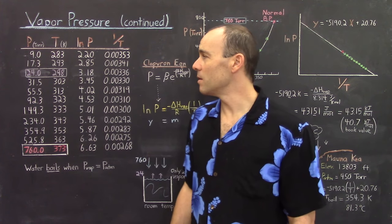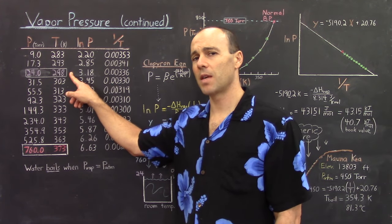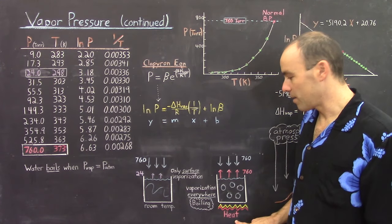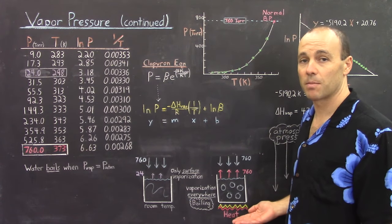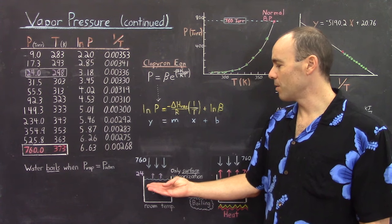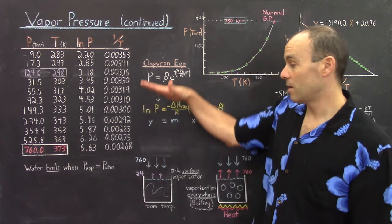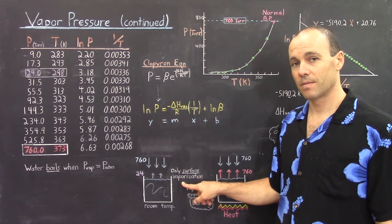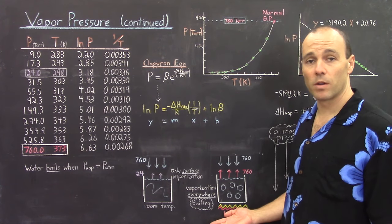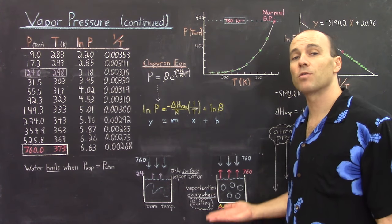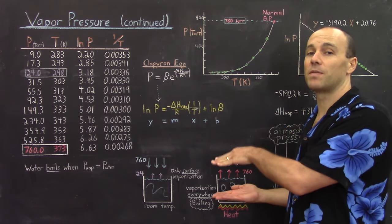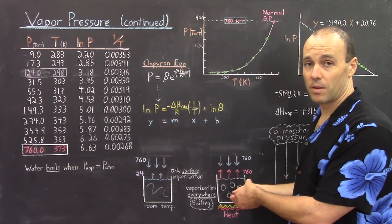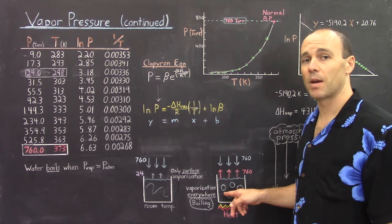Let's take a closer look at the difference between vaporization at room temperature versus at the boiling temperature. Here are two containers of water: one is at room temperature, and the other at the boiling temperature. Room temperature water only exhibits a vapor pressure of 24 Torr, which is much less than the 760 Torr of the atmosphere, and vaporization is only going to occur at the surface. But when the temperature of water is increased up to 100 degrees Celsius or 373 Kelvin, its vapor pressure is now equal and pushing in the opposite direction of the atmosphere. As a result, vaporization not only occurs at the surface but also all throughout the liquid — and that's what these bubbles are: water being vaporized throughout the bulk liquid phase.